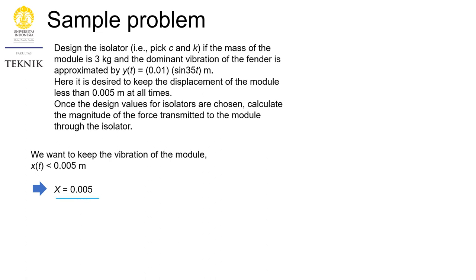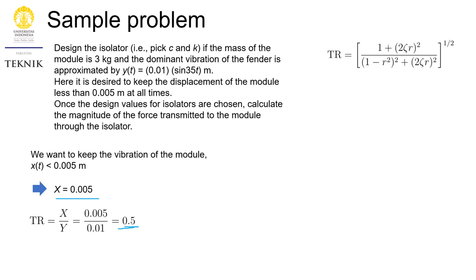To solve this, first we state the requirement: X must be less than 0.005 m, and from this we can calculate the required transmissibility ratio TR, which is 0.5. Mathematically, with the given TR value, we need to solve for two unknowns: zeta — to find c — and R — to find omega_n and subsequently k. This is quite challenging without additional conditions, so it is better to look at the TR graph.